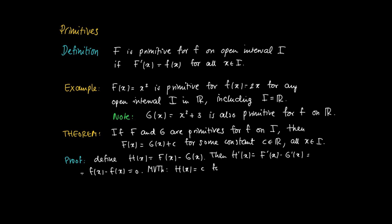So there must be a c such that H(x) = c for all x in I. Well what does it mean? I'll just plug in the definition of capital H. Then we see that capital F equals capital G plus c for some constant c in ℝ, and this holds for all x's in I.